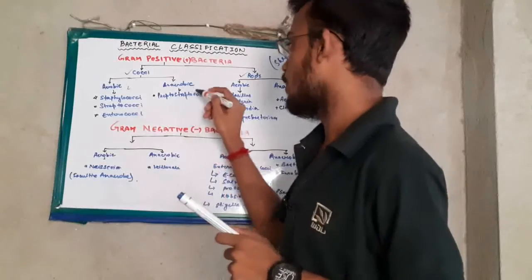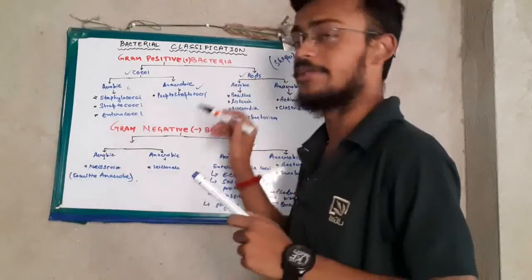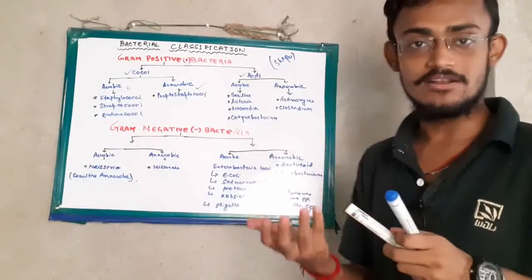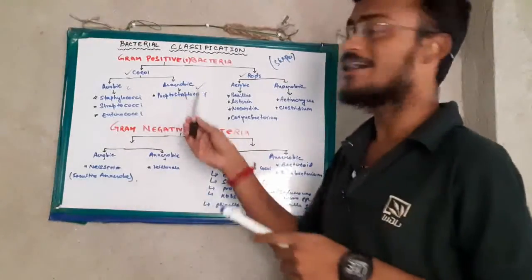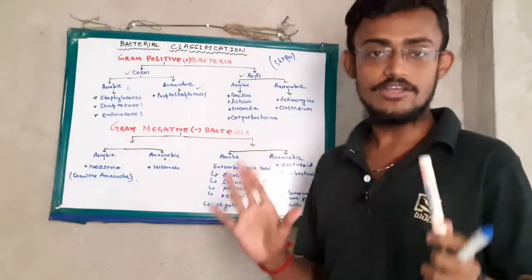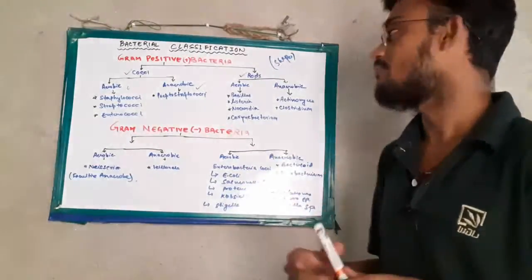Gram-positive cocci is further classified in two types on the basis of aerobic and anaerobic. Aerobic means the bacteria which require oxygen for their growth and survival. Anaerobic means the bacteria which do not require oxygen for growth and survival.